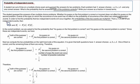In other words, we have a formula. The probability of A and B happening is equal to the probability of A times the probability of B.